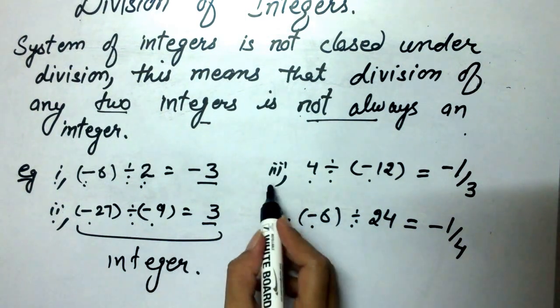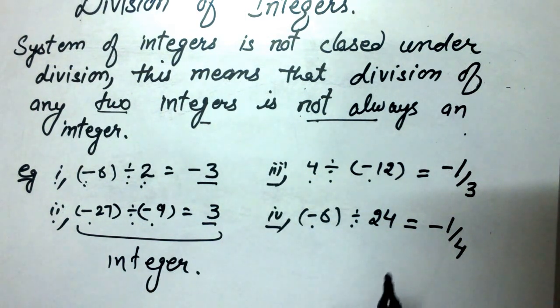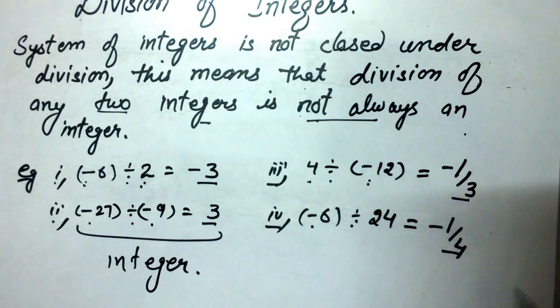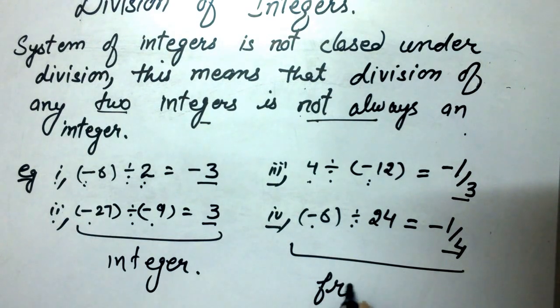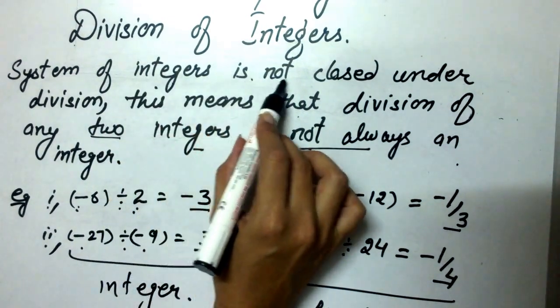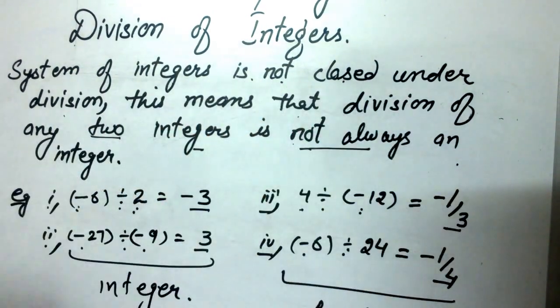But in example 3 and 4, we can see that division of two integers is not an integer, but it is a fraction. So here we prove that system of integers is not always closed under division.